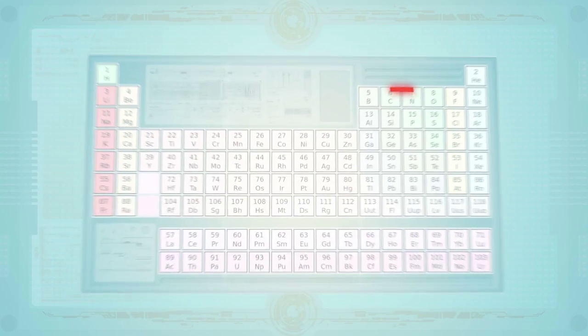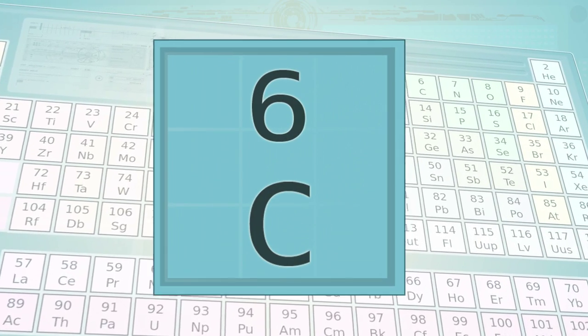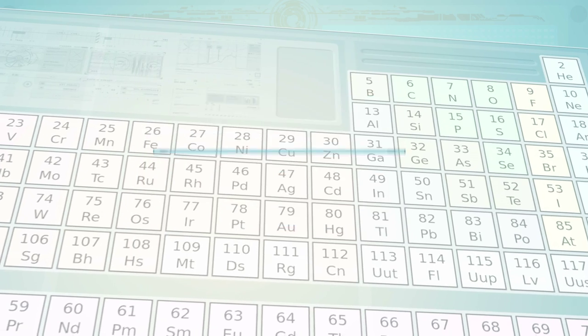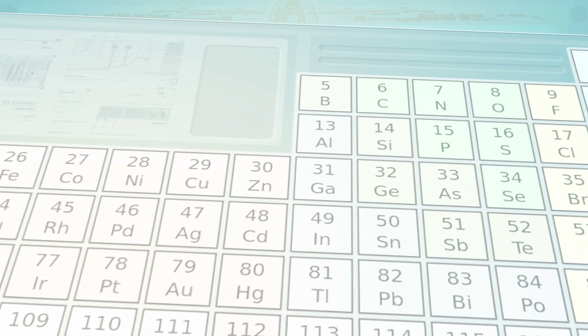Graphene is made out of plain old carbon, one of the most common and familiar elements out there, so scientists were surprised to find this new form of carbon had such amazing properties.